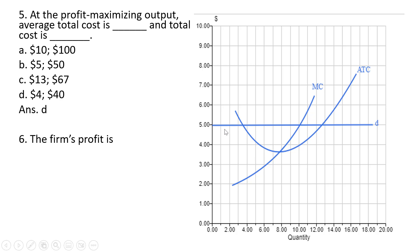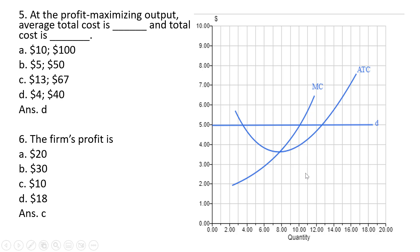Question 6: the firm's profit is total revenue minus total cost. Total revenue is 5 times 10, or $50. Total cost is 4 times 10, or $40. The difference between $50 and $40 is $10. The correct answer for question 6 is C.